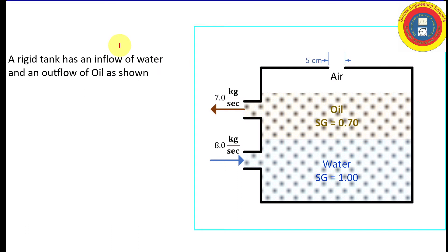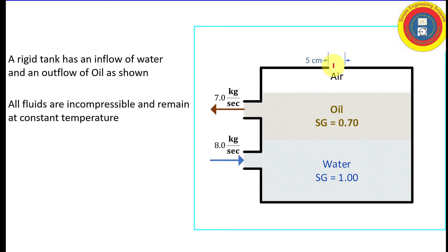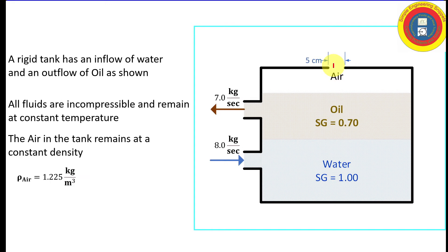We have a rigid tank with an inflow of water and an outflow of oil. The air is either being compressed or expanding, so we will be looking for the mass flow rate of air and determining whether it's an inflow or an outflow. All fluids are incompressible and remain at constant temperature. The air in the tank is at a constant density, and the densities of oil and water are provided via specific gravities.